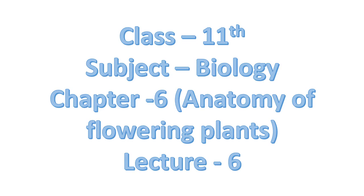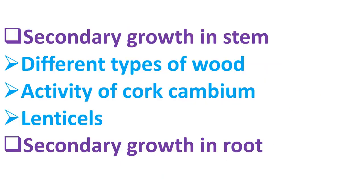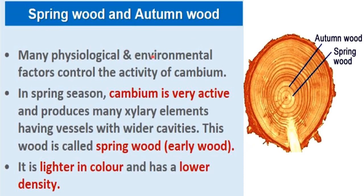Good morning students. This is 11th class biology, Chapter 6: Anatomy of Flowering Plants, and this is the last lecture of this chapter — Lecture 6. Topics to be discussed today are secondary growth in stem, different types of wood that result due to secondary growth, activity of cork cambium and lenticels, and secondary growth in root.